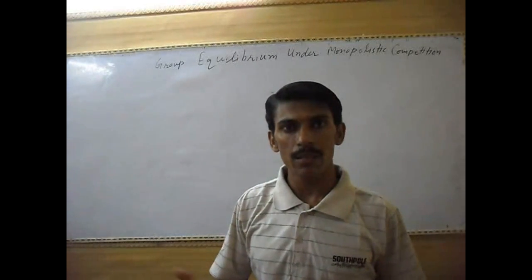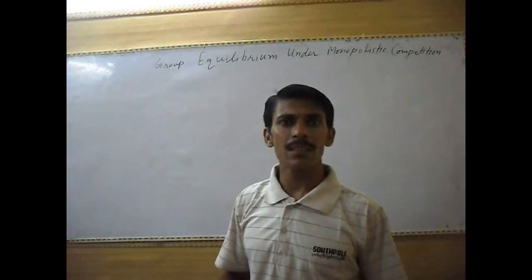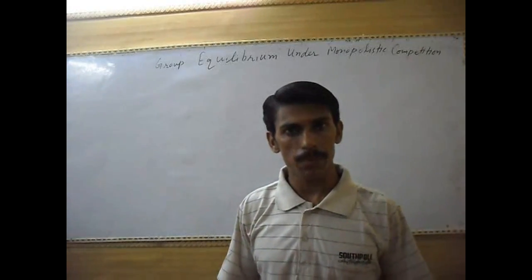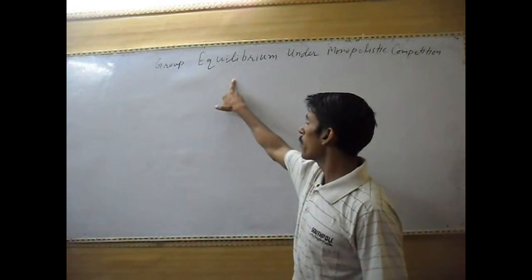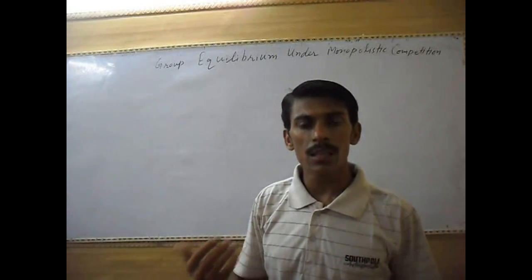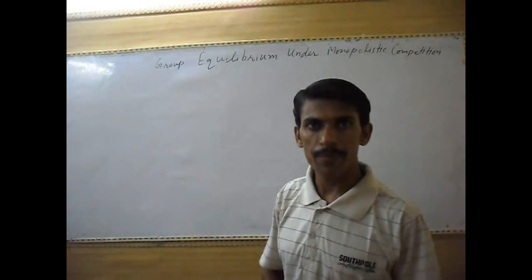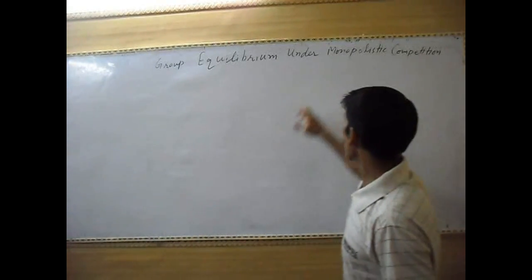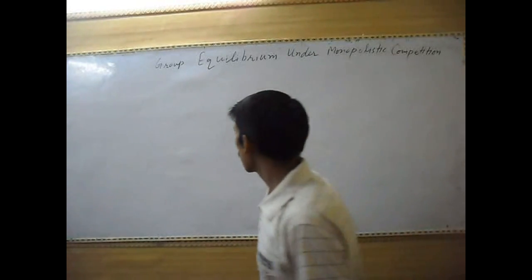These products' qualities are different and consumers can use another product as a substitute. So when we talk about group equilibrium, we need to understand the point of balance where the different firms are getting balance.